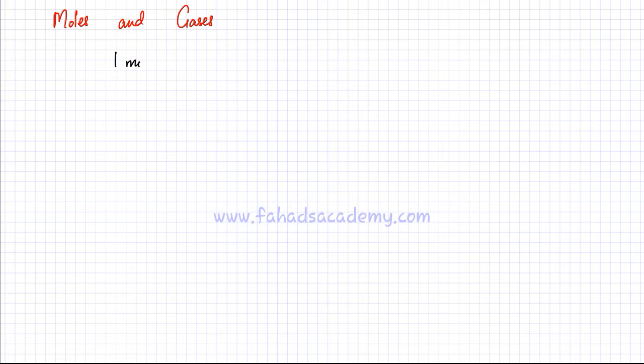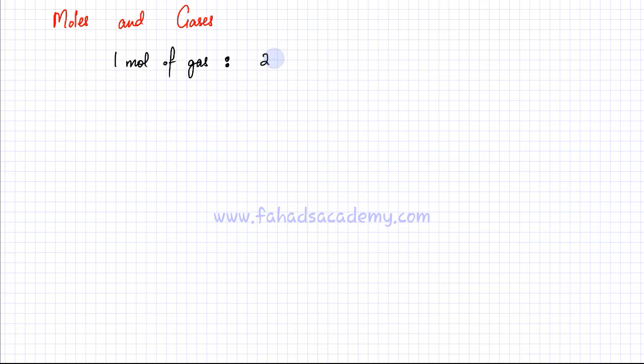In this lecture we're going to discuss the relationship between moles and gases. One very important statement you must remember is that one mole of any gas is going to occupy 24 dm³ volume. 24 dm³ is basically equal to 24 liters. So one mole of any gas occupies 24 dm³.